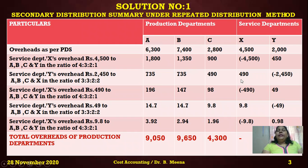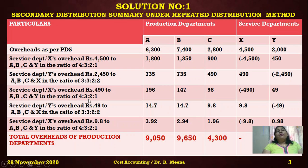Now redistribute X's overhead of Rs. 490 — received from Y — among A, B, C, and Y in the ratio 4:3:2:1. That gives: 490 × 4/10 = 196 for A; 490 × 3/10 = 147 for B; 490 × 2/10 = 98 for C; and 490 × 1/10 = 49 for Y.